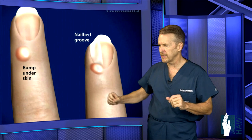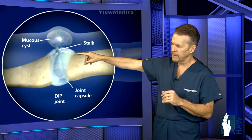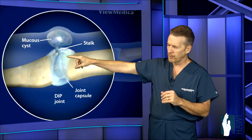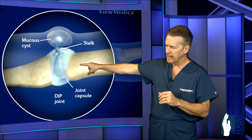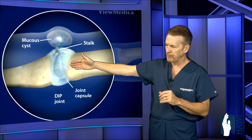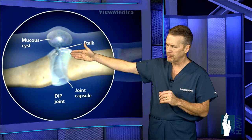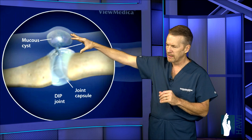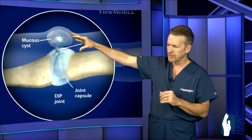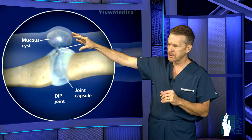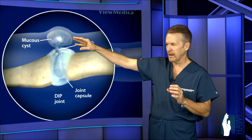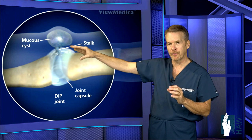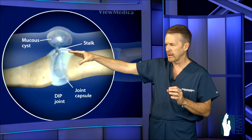Let's take a look at what's happening under the skin. This shows a nice schematic of the distal interphalangeal joint between the distal phalanx at the tip and the middle phalanx. Out of the joint capsule, from underlying arthritis, pops a cyst — almost like a little mushroom-type structure filled with jelly — and it can fluctuate in size as fluid drains back and forth between the joint and the cyst.